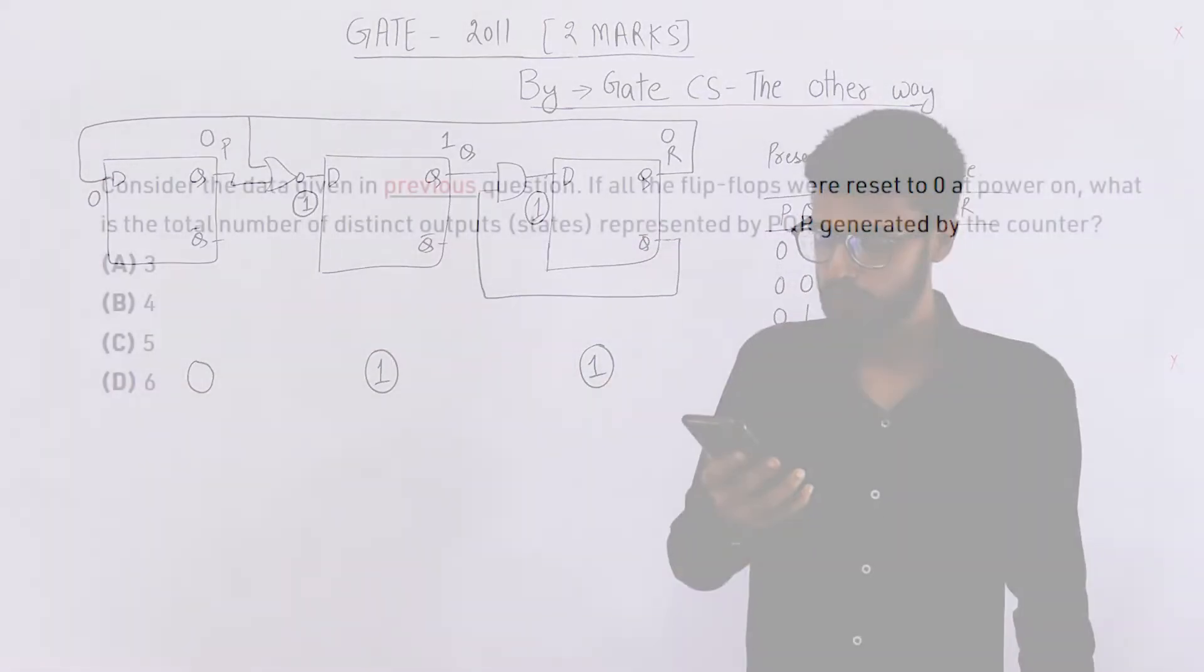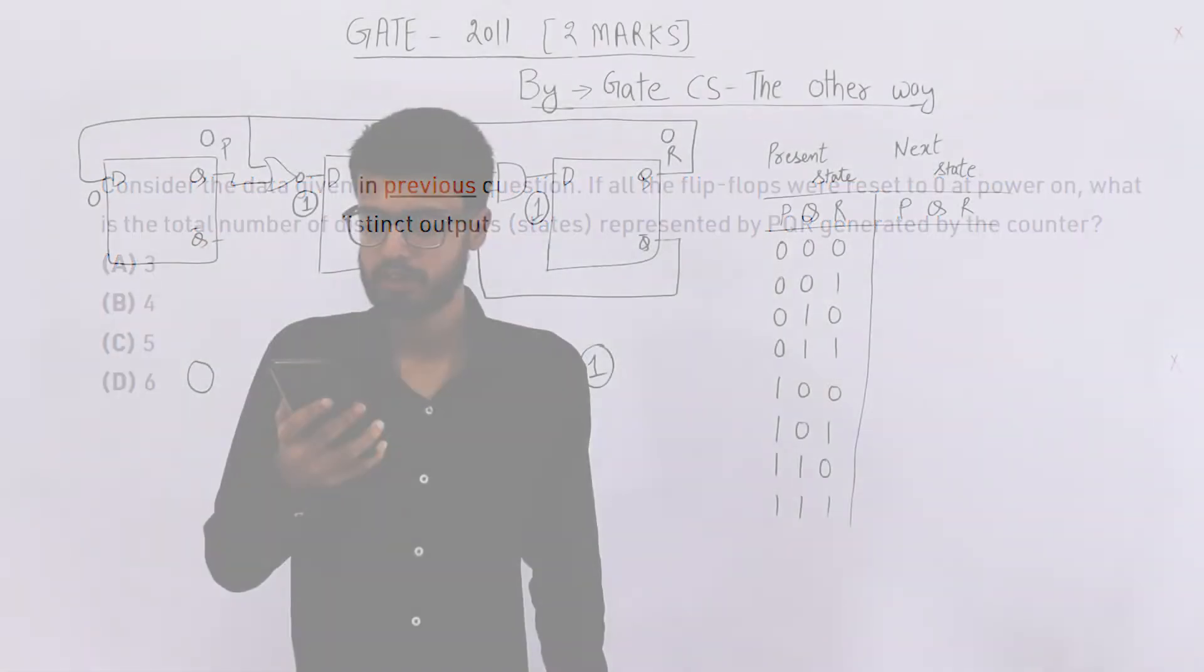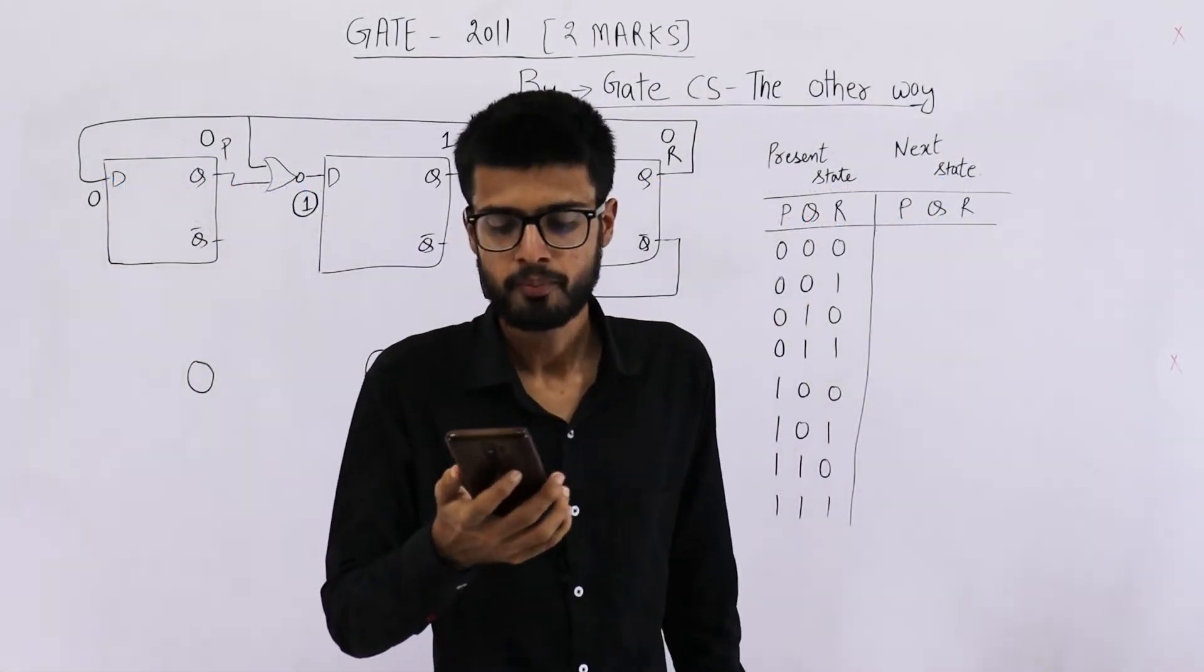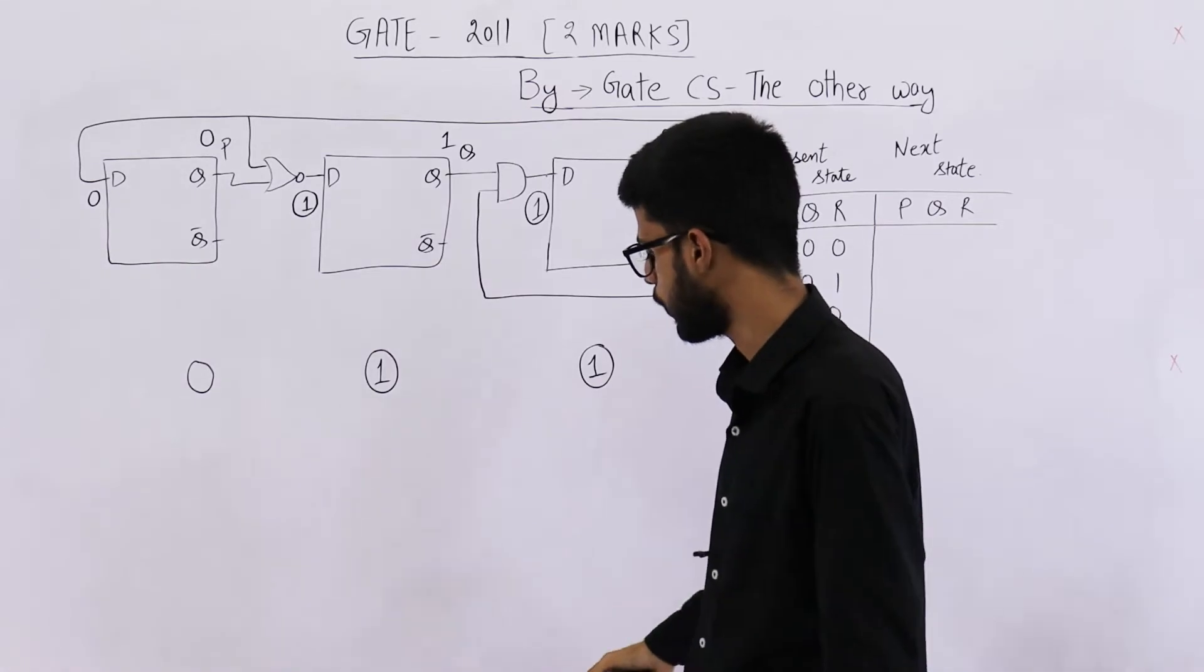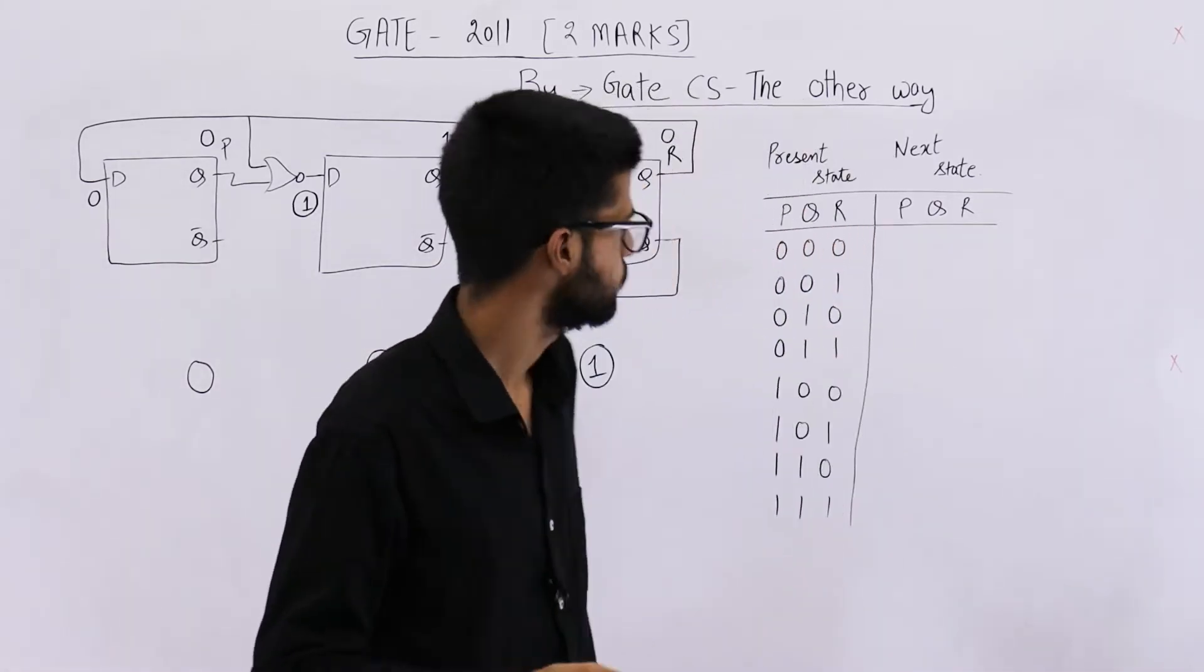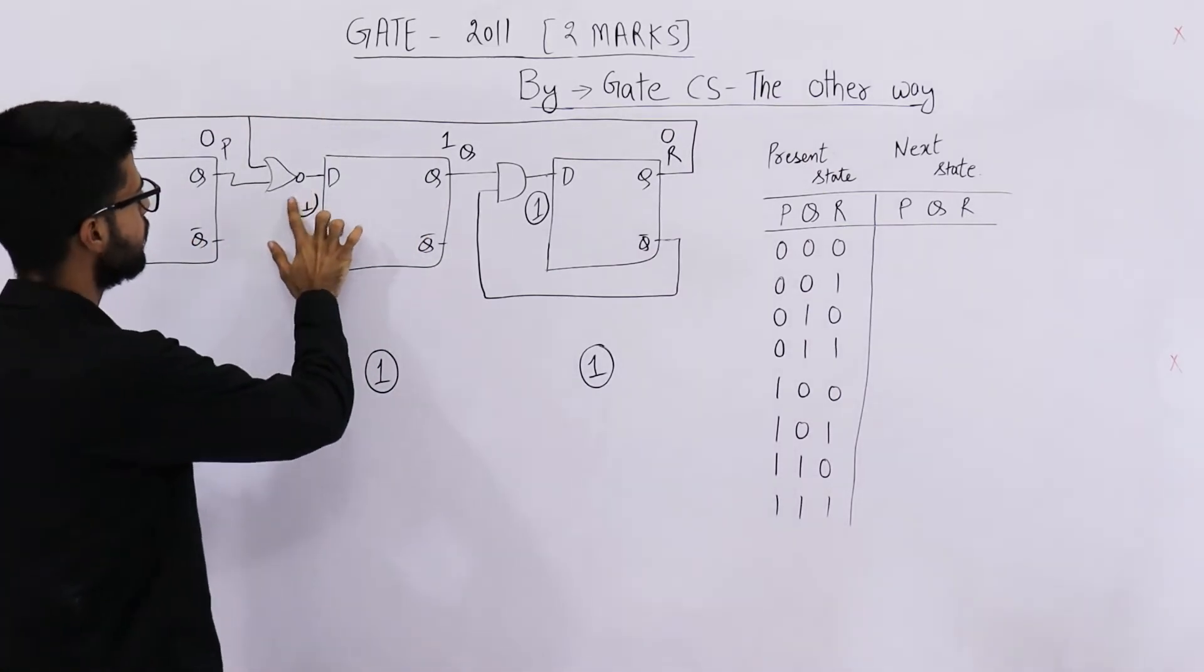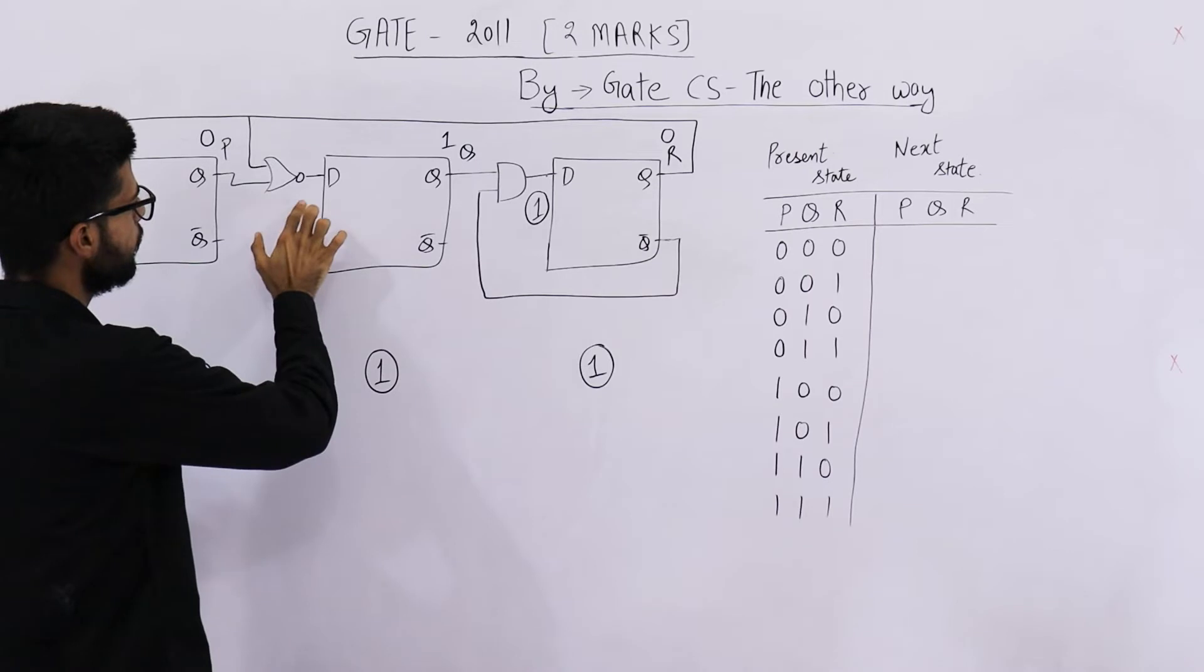Now let me display second part of this question. It reads, if all flip-flops were reset to 0 at power on, what is the total number of distinct outputs or states represented by PQR generated by the counter? So we need to determine mod of this counter if it begins from 0, 0, 0. So initially, they are saying PQR are 0.